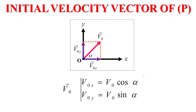Step one: we find the components of v₀, the initial velocity vector. v₀ has two components, v₀ₓ and v₀ᵧ. We project v₀ along the x-axis and y-axis. v₀ₓ is the adjacent component, so v₀ₓ equals v₀ cosine alpha. v₀ᵧ equals v₀ sine alpha.